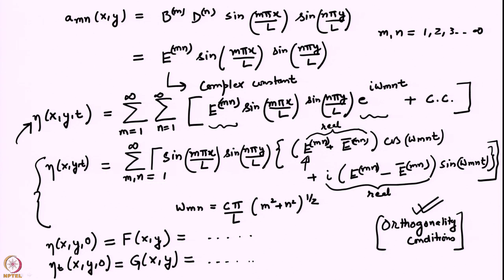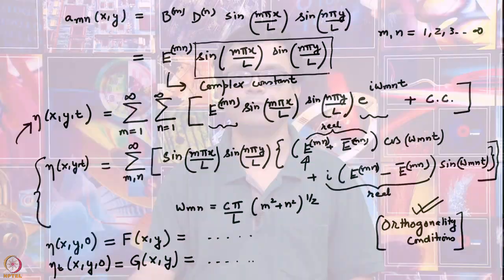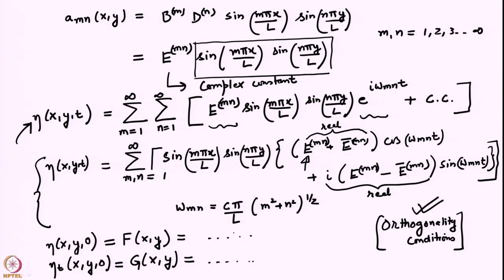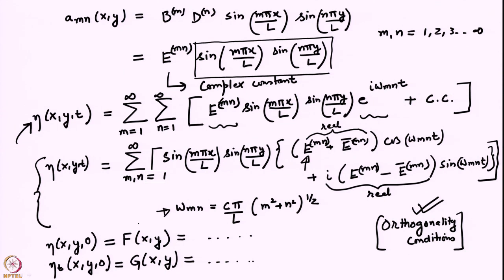If you want the membrane to vibrate in a pure normal mode, say the (1,1) mode, choose an initial displacement proportional to sin(πx/L)·sin(πy/L) with zero velocity everywhere. It will vibrate at frequency (cπ/L)√2. For an arbitrary perturbation F(x,y), many normal modes get excited and the system vibrates as a linear superposition of them. The resultant motion can look extremely complicated and may not even be periodic, though it will still be oscillatory.